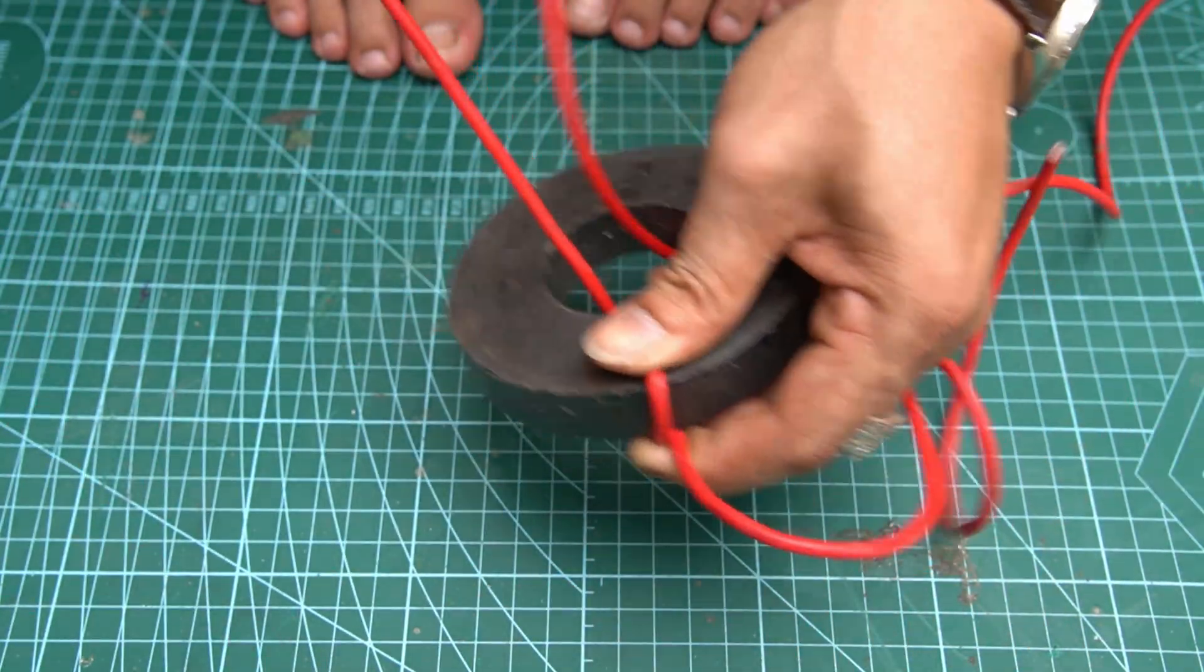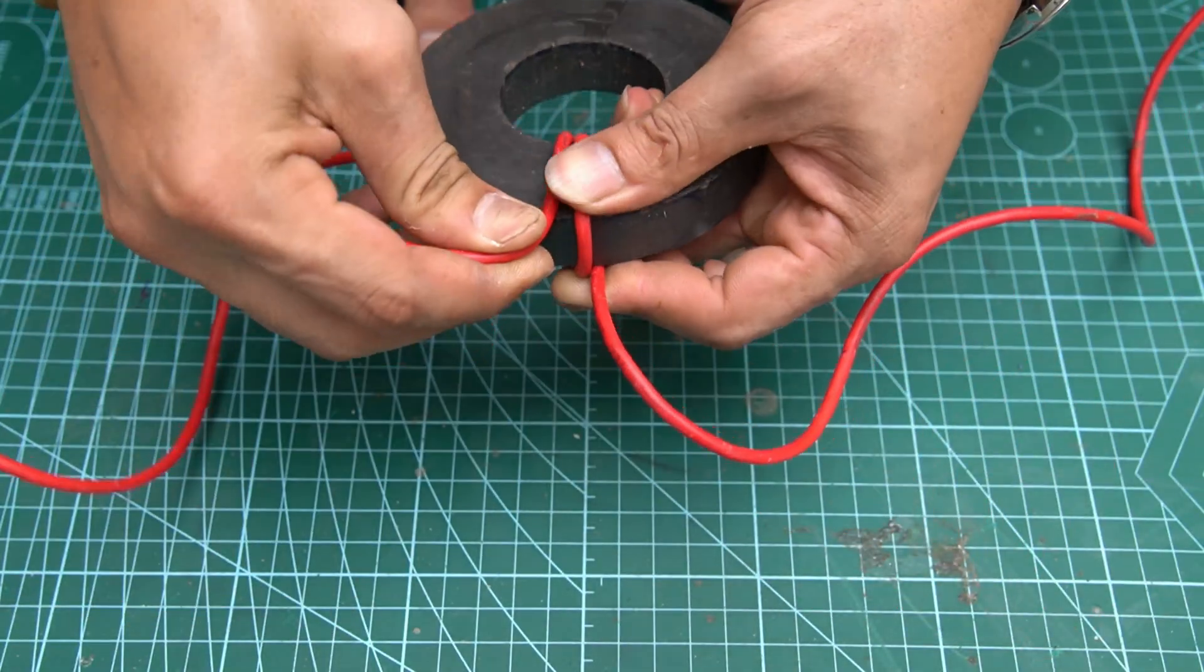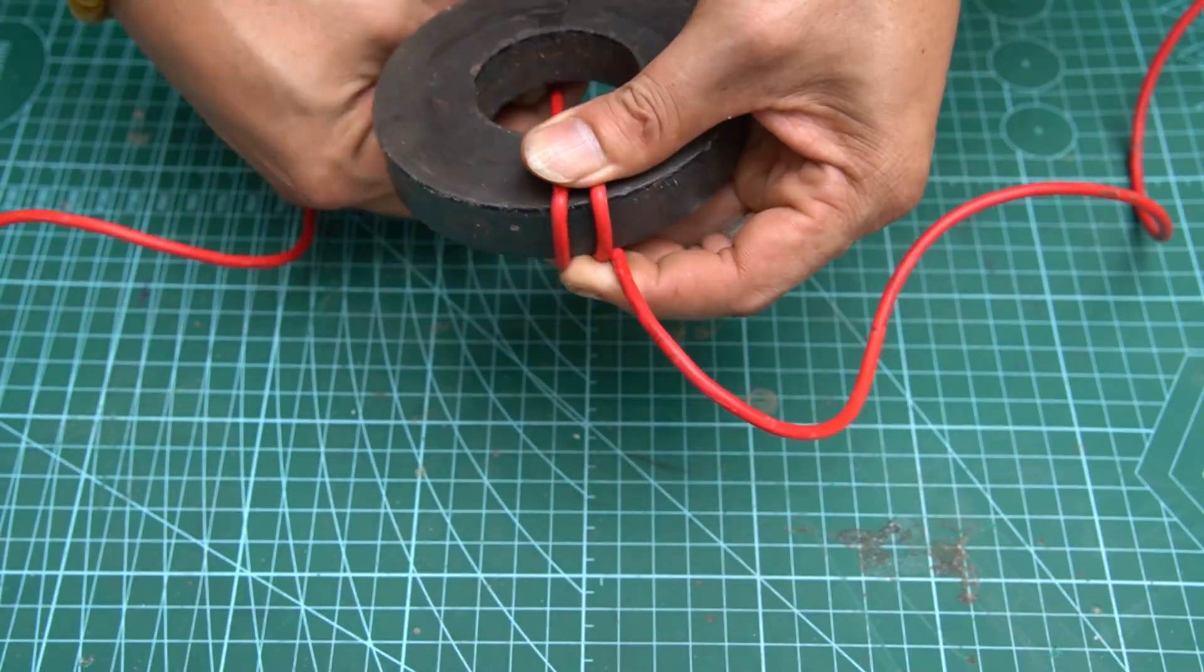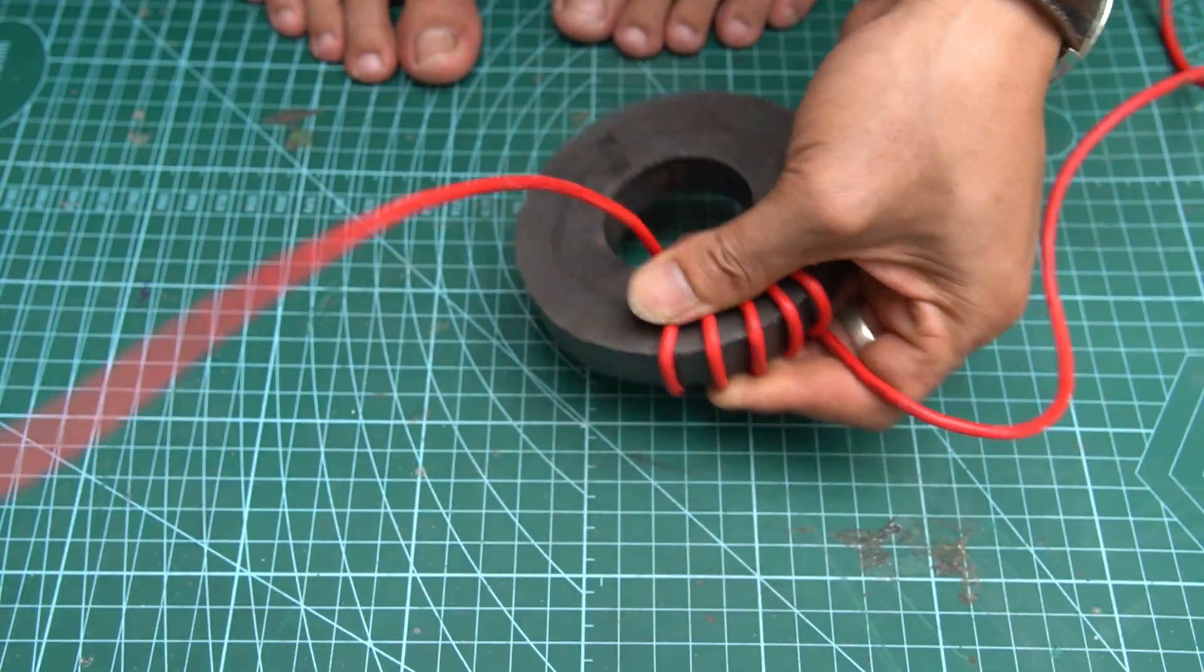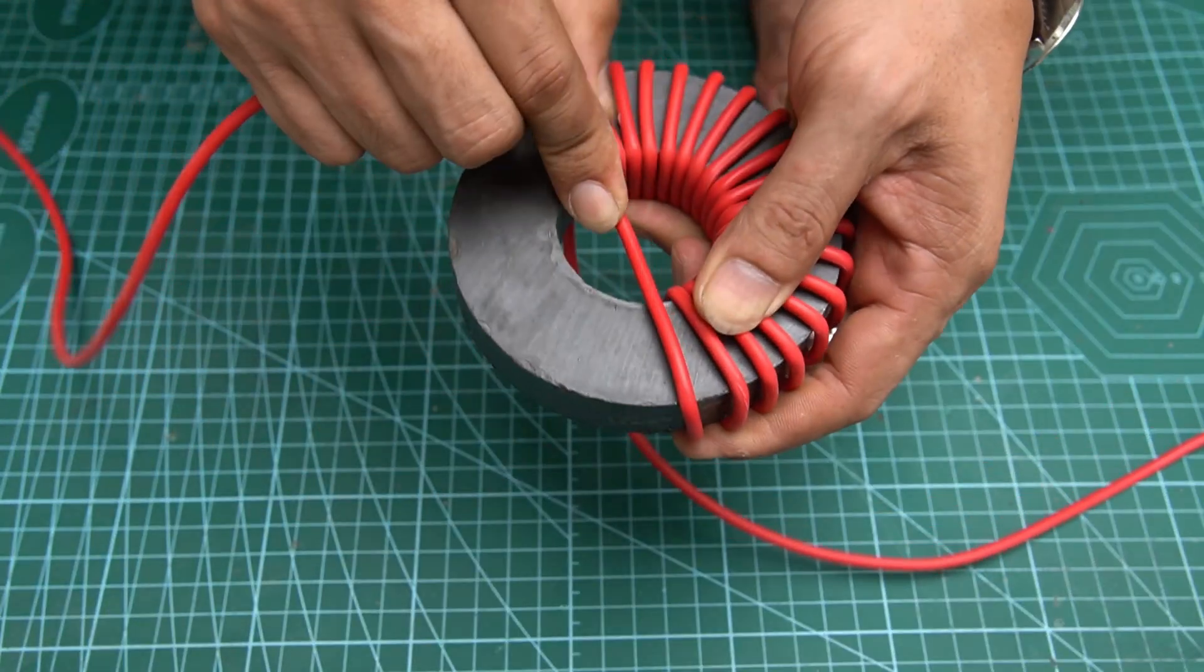You only need two large magnets, some wire, and a 3.7 volt motor.